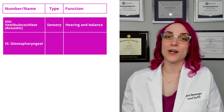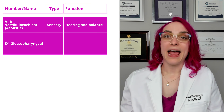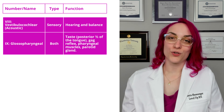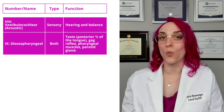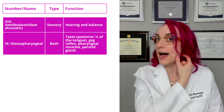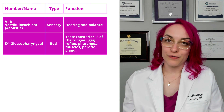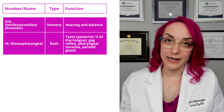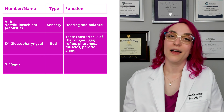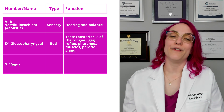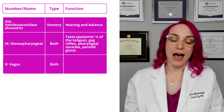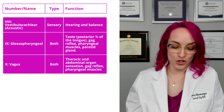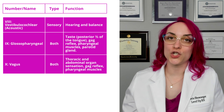Cranial nerve 9 is glossopharyngeal, and this one is both sensory and motor. It controls taste on the posterior one-third of the tongue, the gag reflex, pharyngeal muscles, and control of the parotid gland. Moving on to cranial nerve 10, the vagus nerve — also both sensory and motor — which covers thoracic and abdominal organ sensation, along with the gag reflex and other pharyngeal muscles.